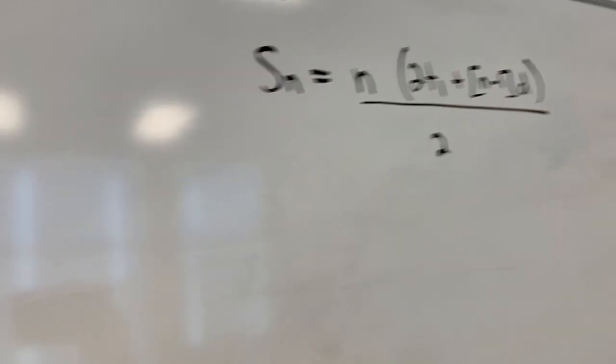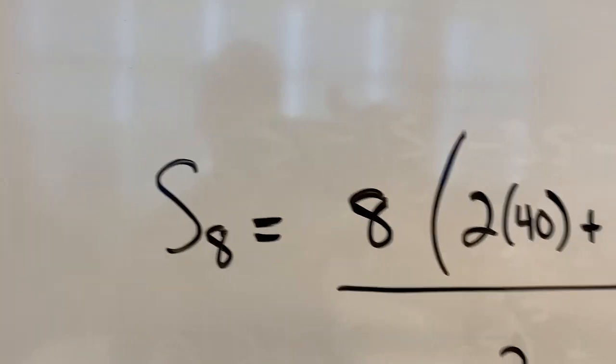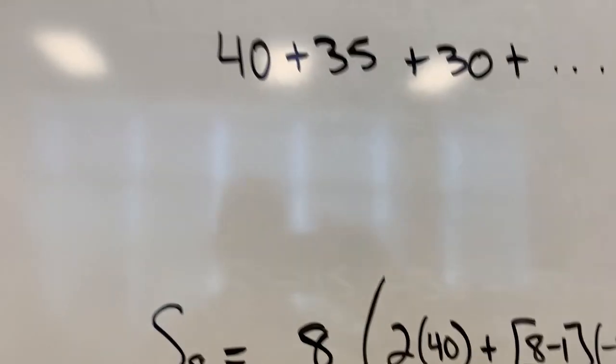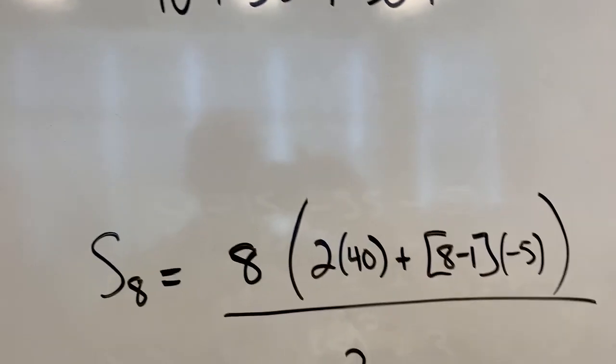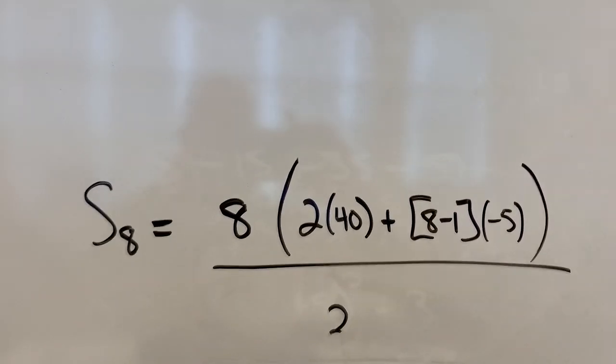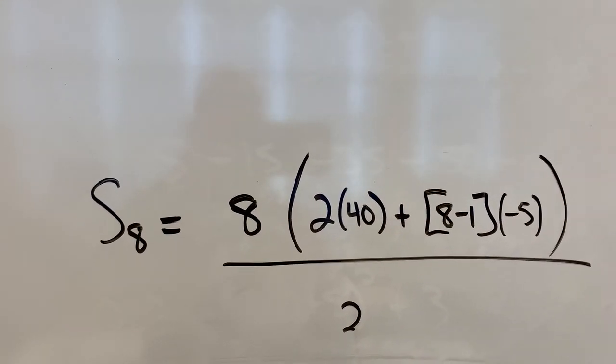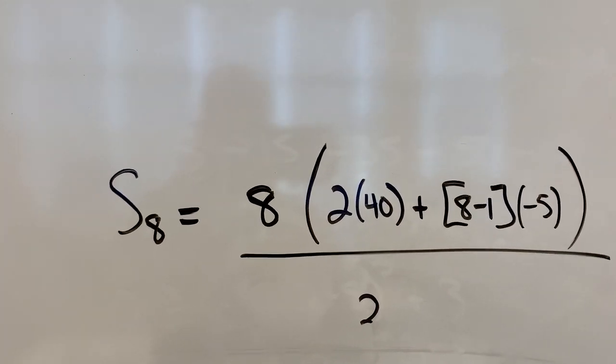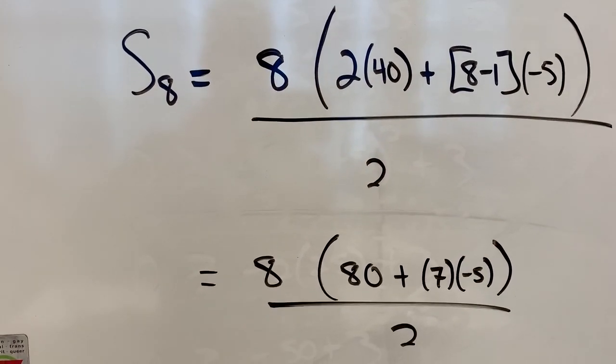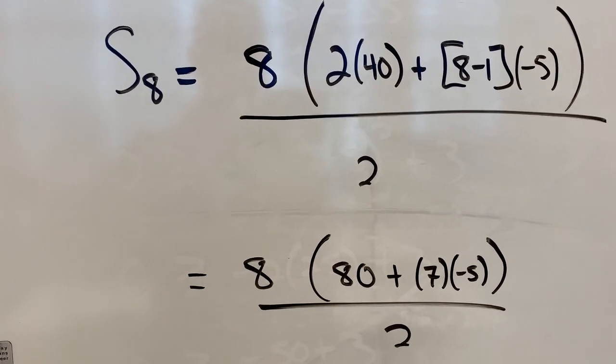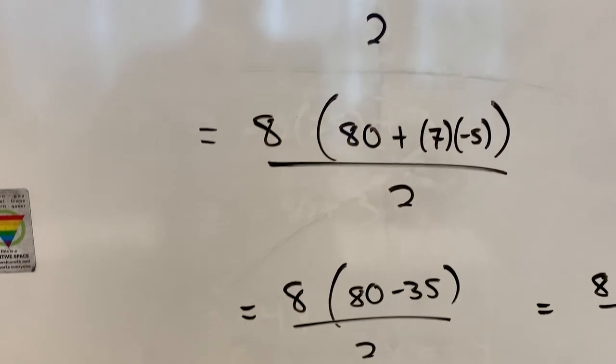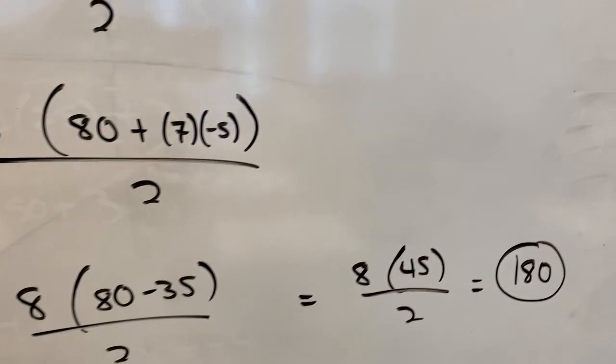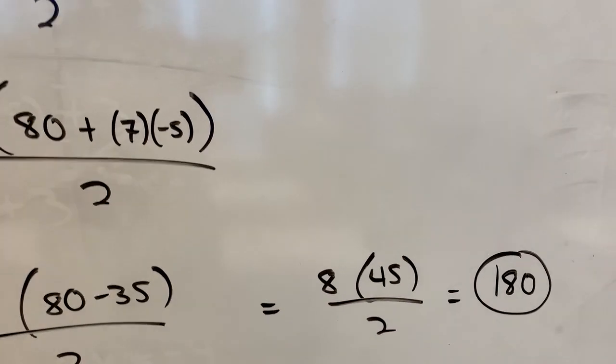If I substitute in the pieces, I'm finding S8 so n is 8, term 1 is just 40, and the common difference as I said a moment ago is negative 5. Once you get to there, you're just carrying out order of operations, being careful to do brackets before you start putting things together. I've got 80 minus 35 in those upper brackets, so I end up with a sum of 180.